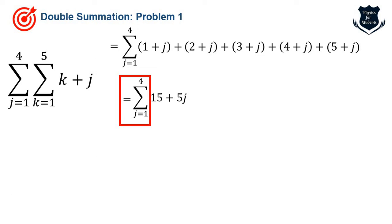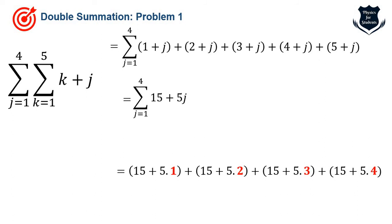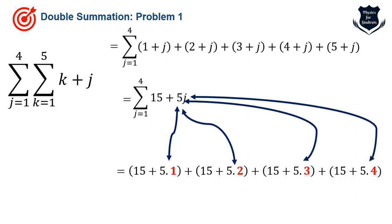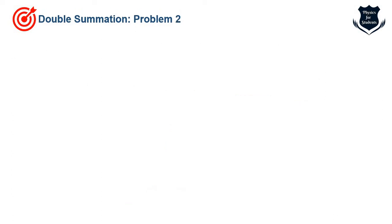Summing the innermost gives us 15 + 5j. Now we solve the outer sigma j=1 to 4, keeping 15 and 5 as constants and varying j from 1 to 4. The four blue arrows show how j is incremented. Solving gives the result 110. This is the first example — quite clear.